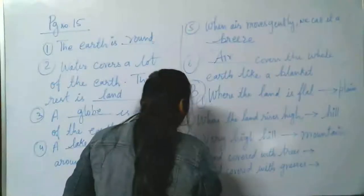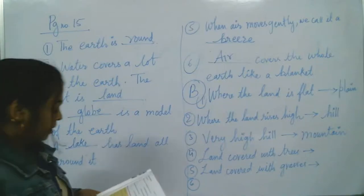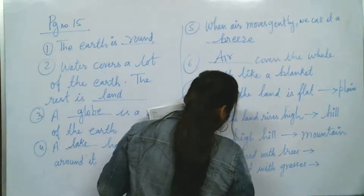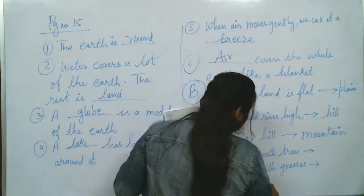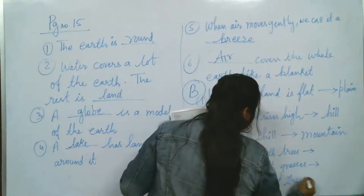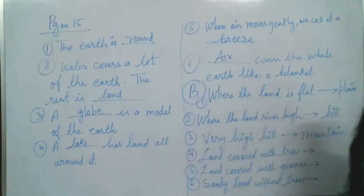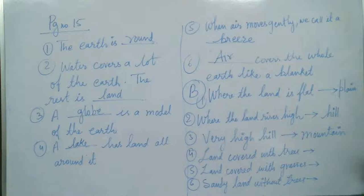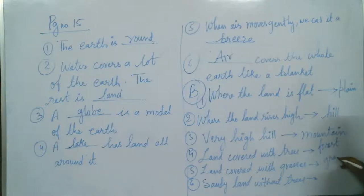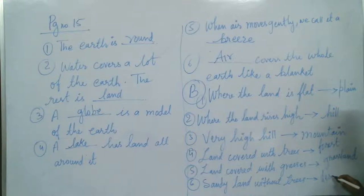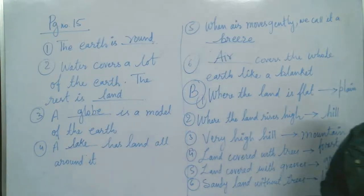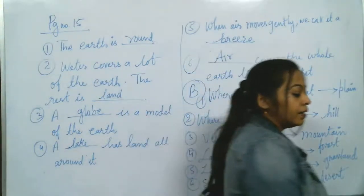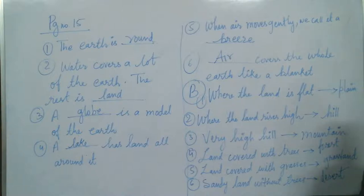Where the land rises high, what do we call it? Hill. And in very high hills, what do we call it? Mountain. Don't get confused - mountains are much bigger than hills. Land covered with trees - that is forest. Land covered with grasses - grassland. Number 6 is sandy land without trees - that is desert. Where sand is there and there is scarcity of water, it's a desert. Very good - lovely answers!